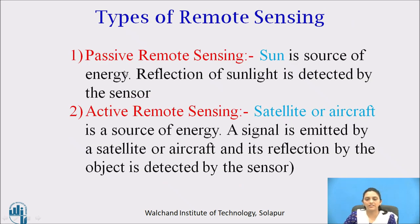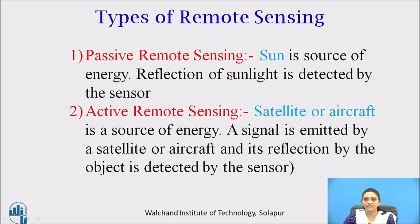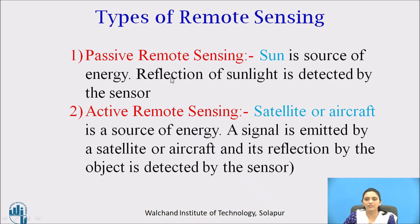Now, types of remote sensing. There are two types: passive remote sensing and active remote sensing. In passive remote sensing, the sun is the source of energy and the reflection of sunlight is detected by the sensor. Its disadvantage is that it works only in daytime and does not work at nighttime.